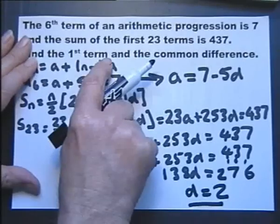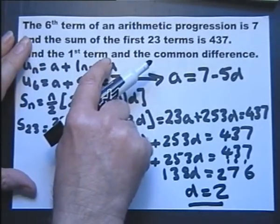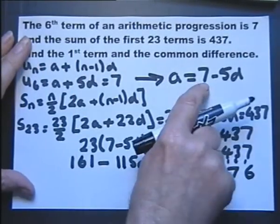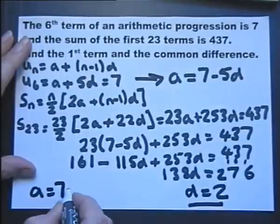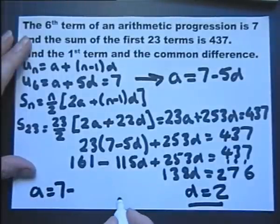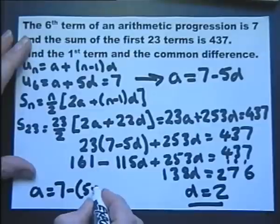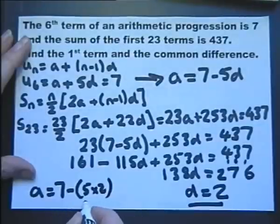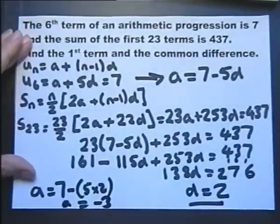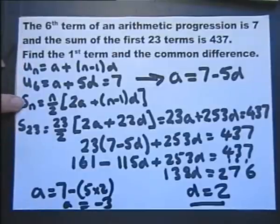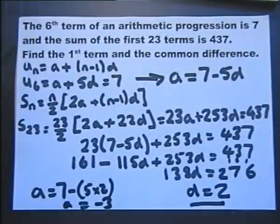Now I need to find the first term A. Substituting D equals 2 back into A equals 7 minus 5D gives A equals 7 minus 5 times 2, which is 7 minus 10, which is minus 3. So I've used the two formulas to work out both pieces of information required.